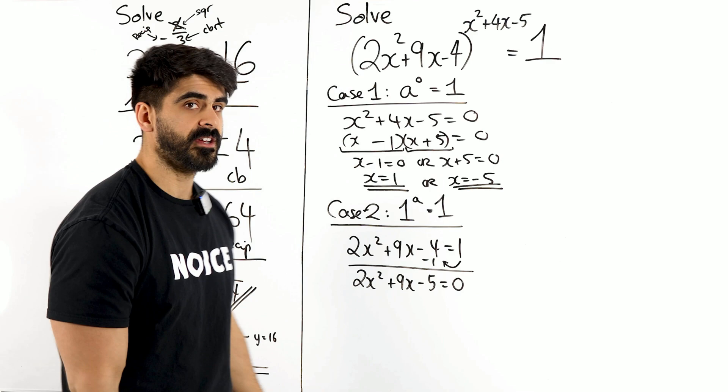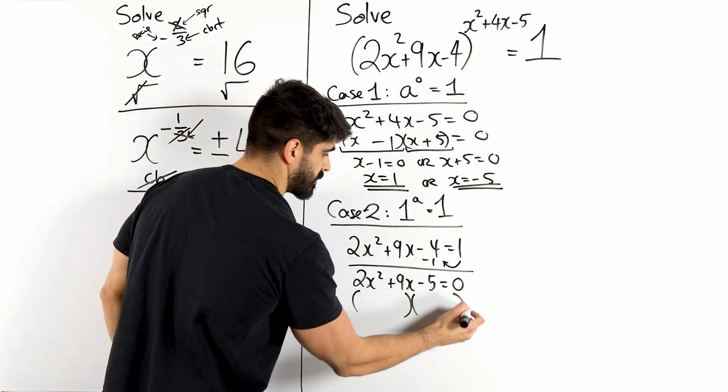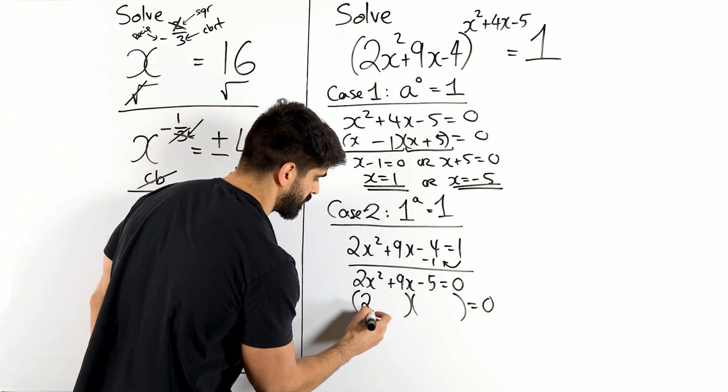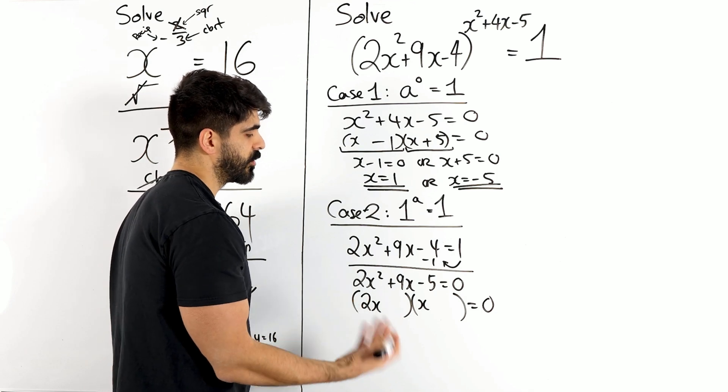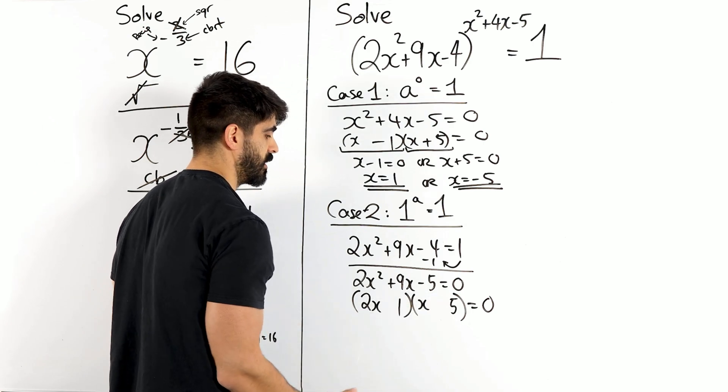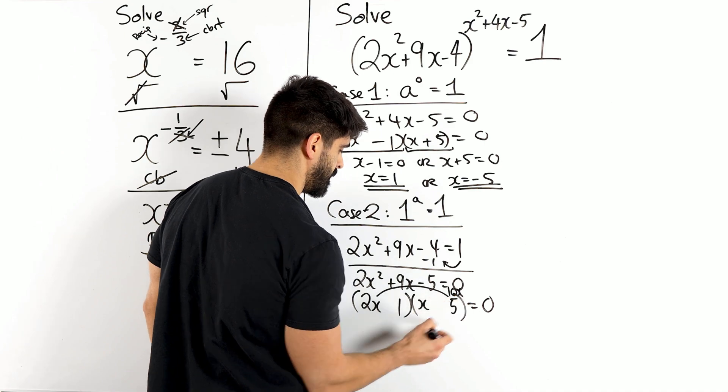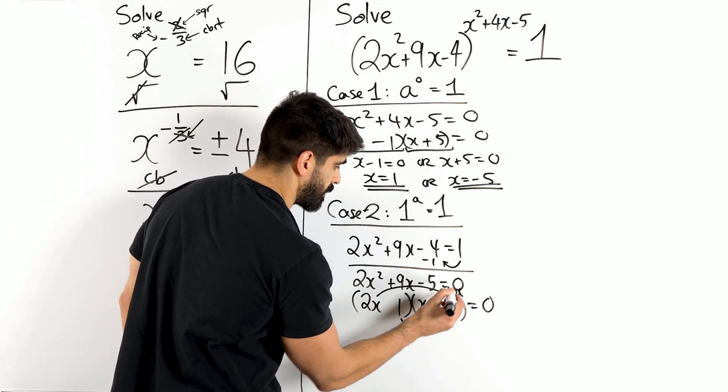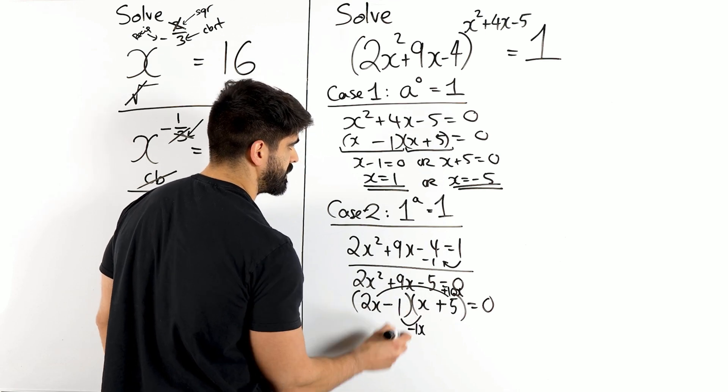And here we need to factorize that using the oi oi method. So, what we're saying is, what multiplies to give you 2x²? Well, two is a prime number so it can only be 2x and x. What multiplies to give you five? Five and one. Then you've got to think, where do I want to put the one and where do I want to put the five? I'm trying to make 9, so for sure I'm going to put the five here and the one here. And this is where we do the oi oi method. 2x times five gives me 10x and this gives me one x. How does 10x and one x make plus nine? Well, that's if we have a plus 10 minus one. Ten minus one gives you nine. So that needs to be plus and this needs to be minus.